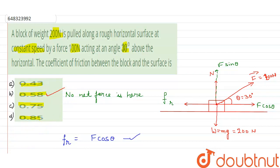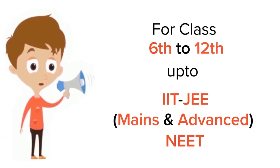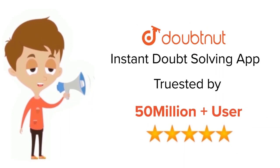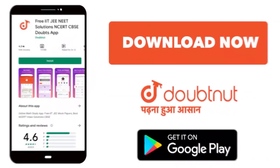So the value of the coefficient of friction is 0.58, that means our correct answer is option number B. I hope this is clear to you all. Thank you very much for watching this video. For class 6 to 12, IIT, JEE, and NEET level, trusted by more than 5 crore students, download Doubtnet app today.